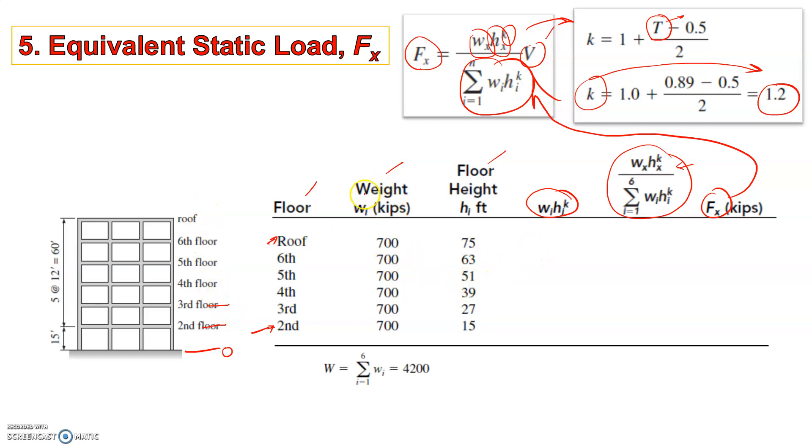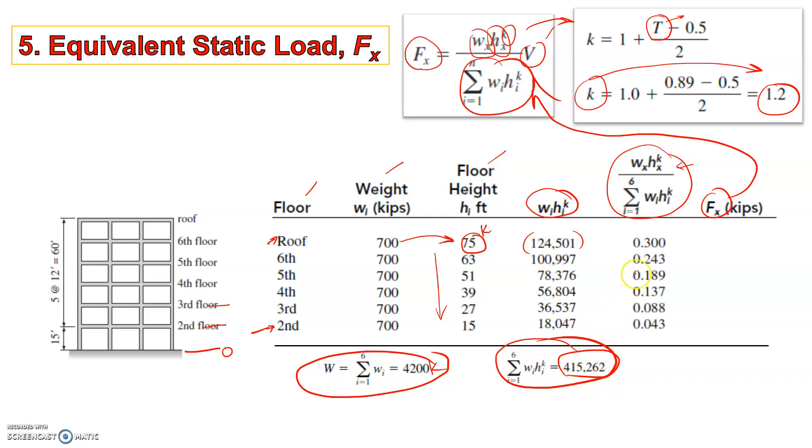Now the sum of all the weights as we calculated earlier is 4200 kips. And Wi*hi to the power K is calculated by multiplying this with this and raising this to the power K. We get this quantity and this can be easily calculated if you are working on excel. This is quite easy. You just have to drag the cell. And we find the sum of all this which gives us a value of 415,262. Now what we need to do is to divide this to the summation. So we get 0.043, 0.137 and so on.